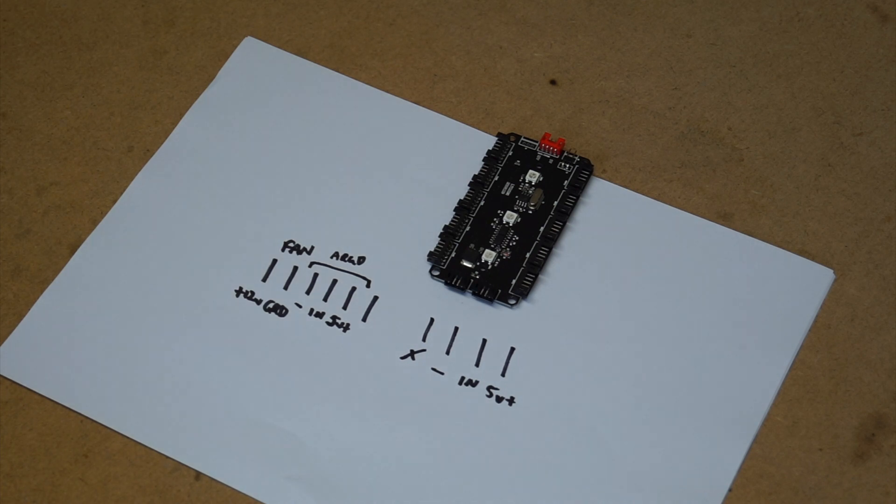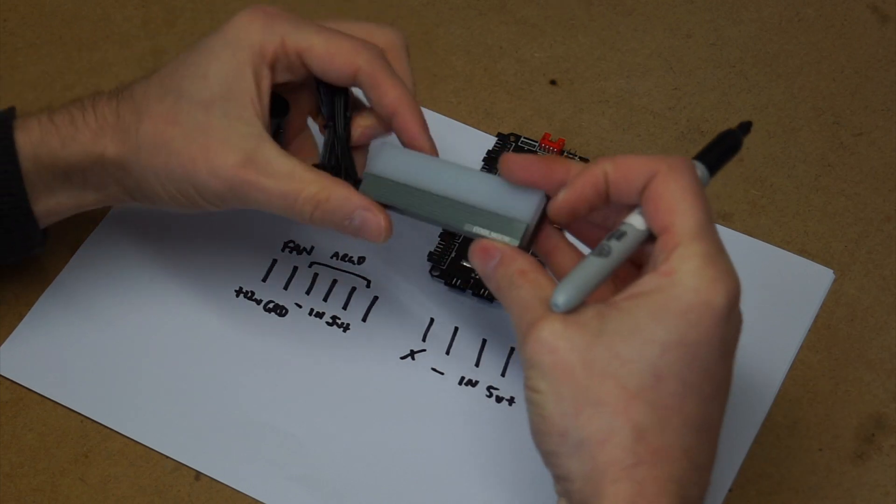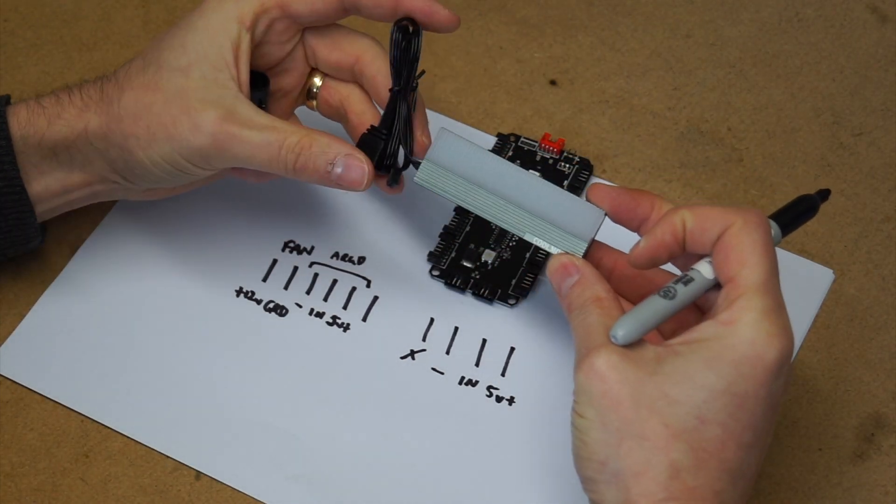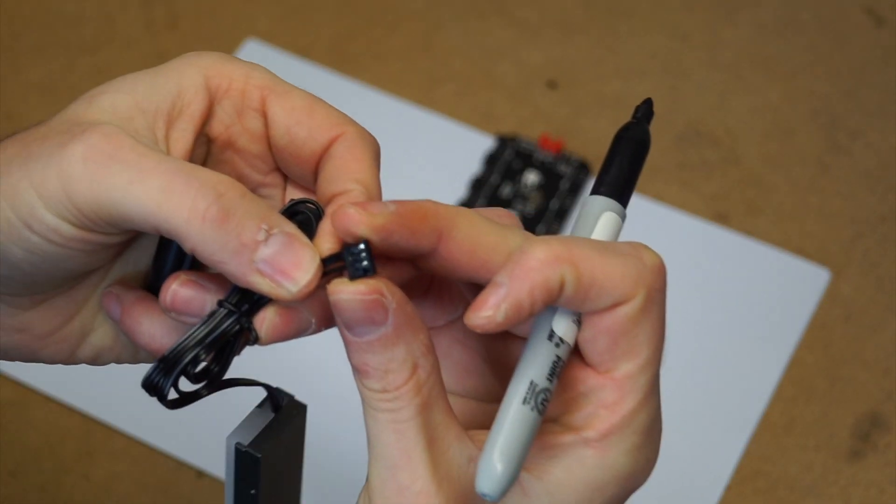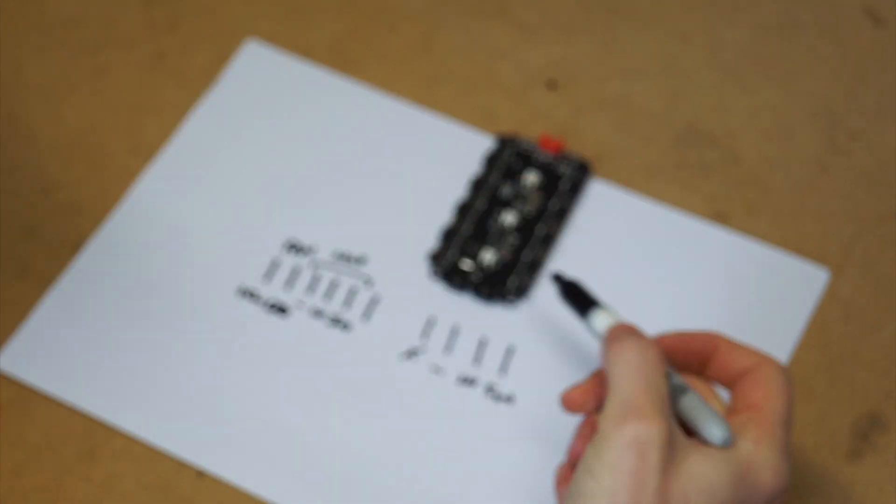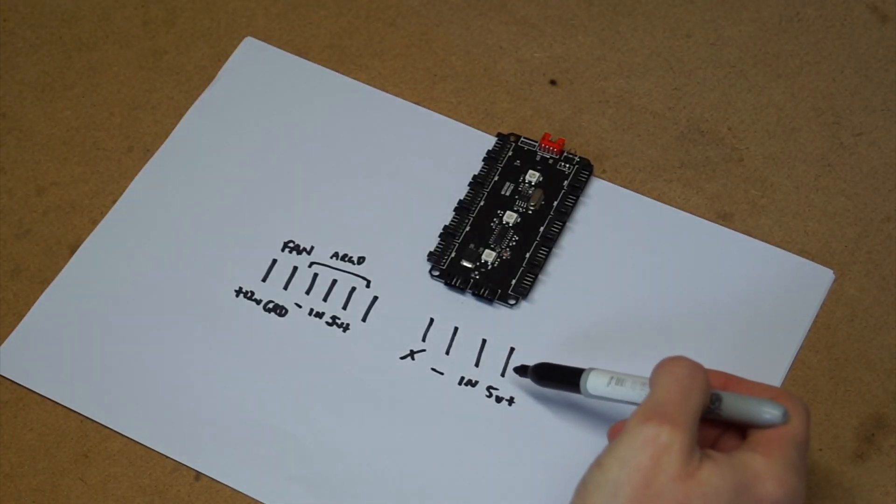We can have a look at an example which is the Cool Moon M.2 drive coolers. If we look at the connectors on them, they actually use the four pin strips but they actually only have three wires and they connect to the minus, the in, and the five volt.